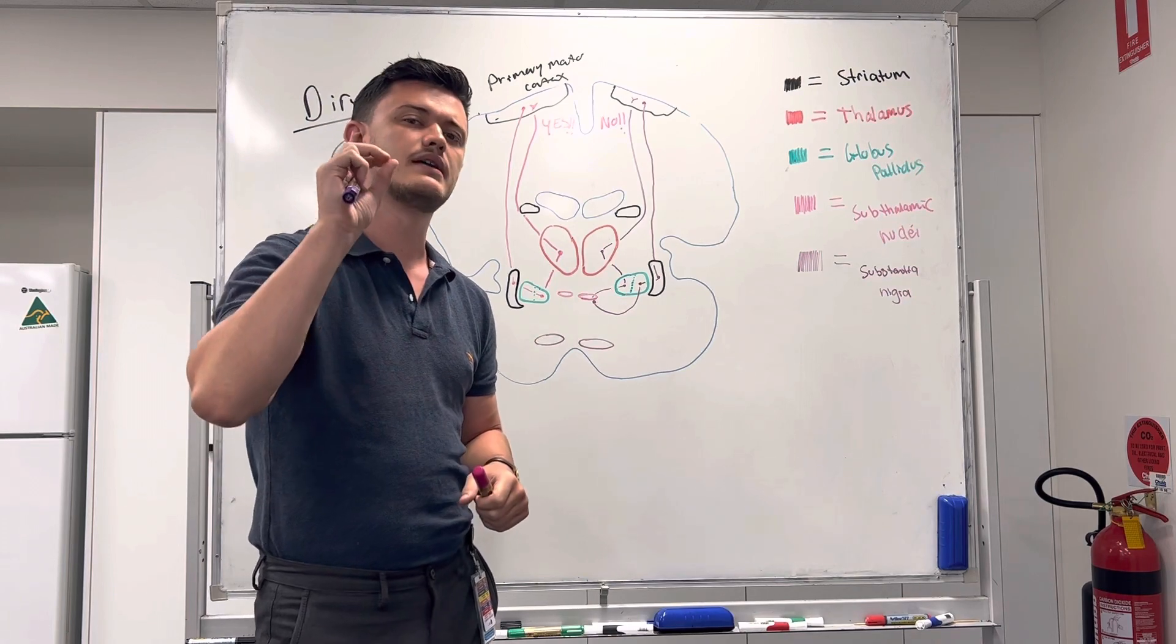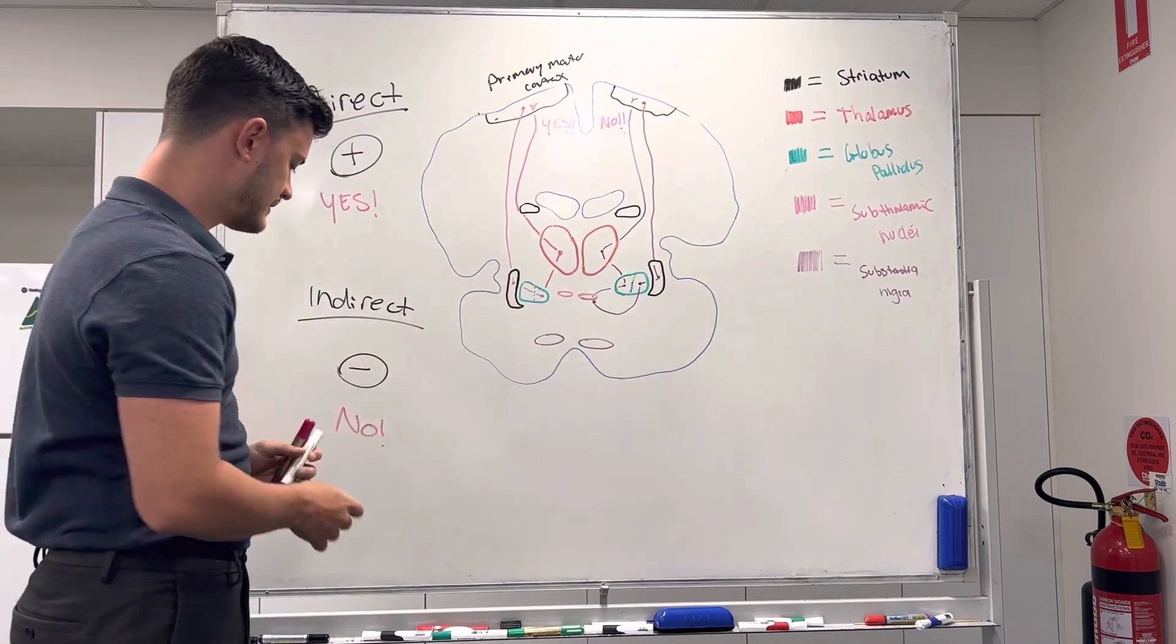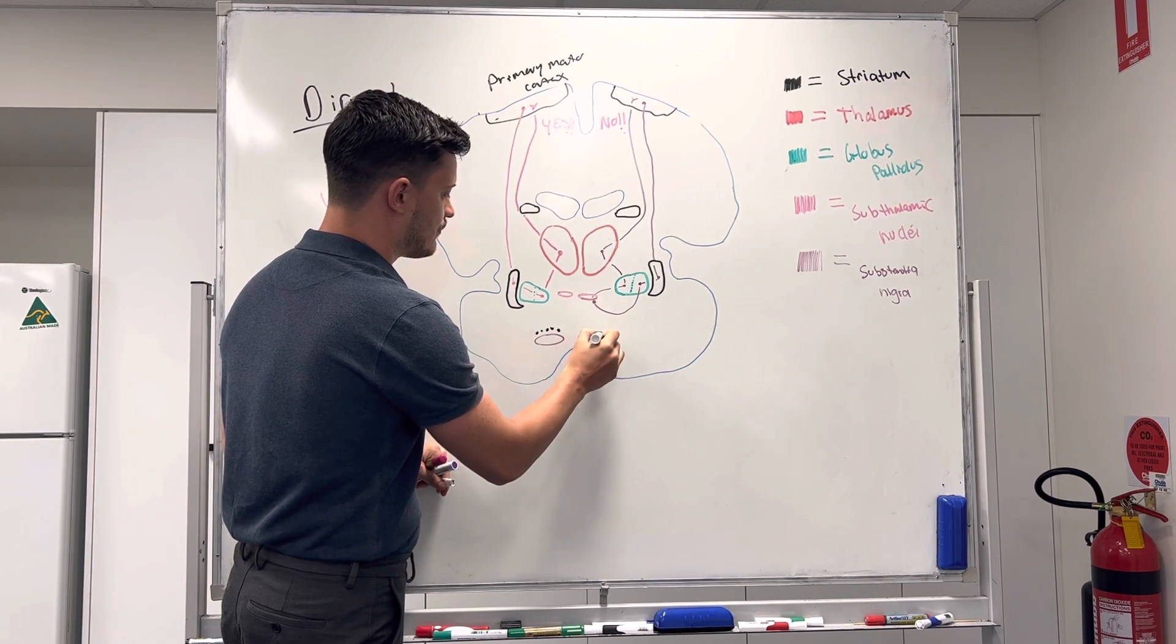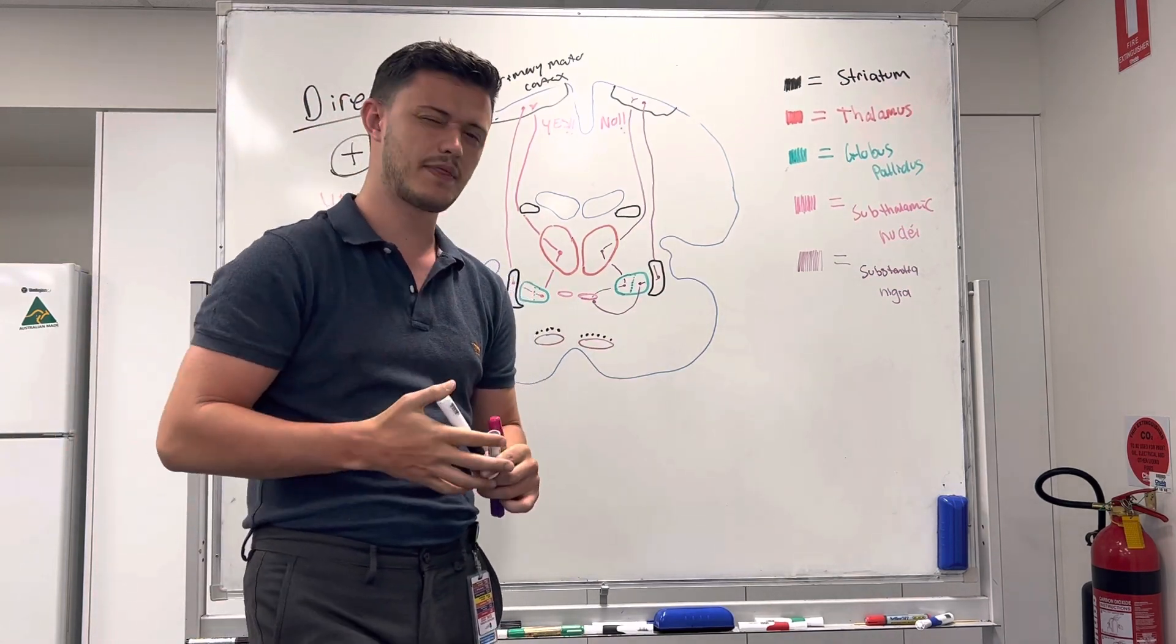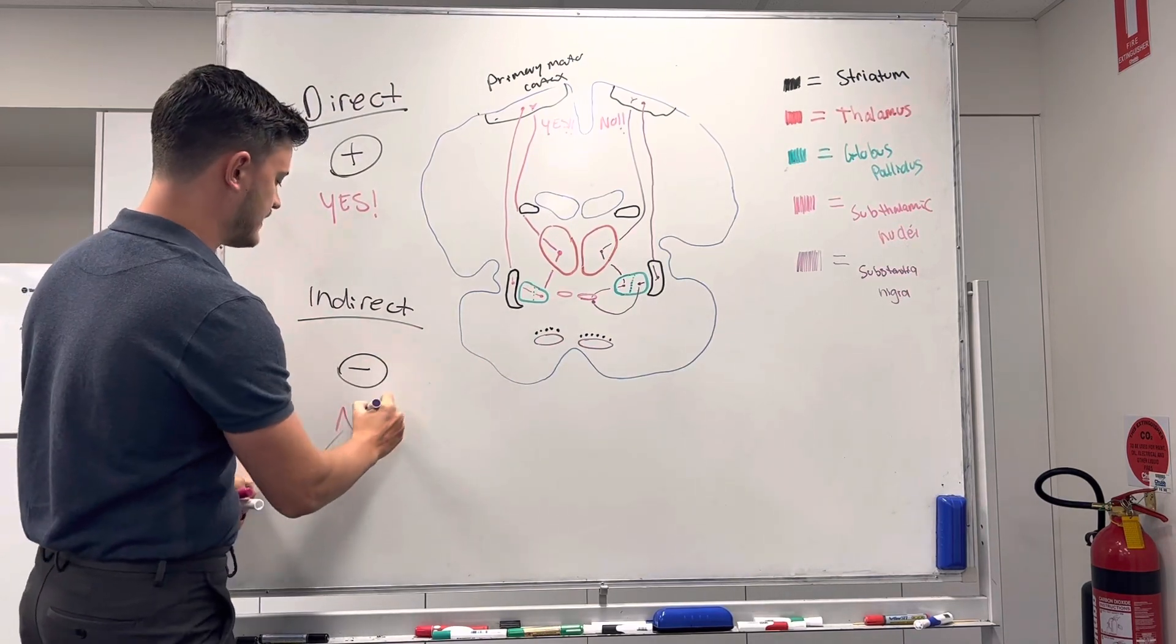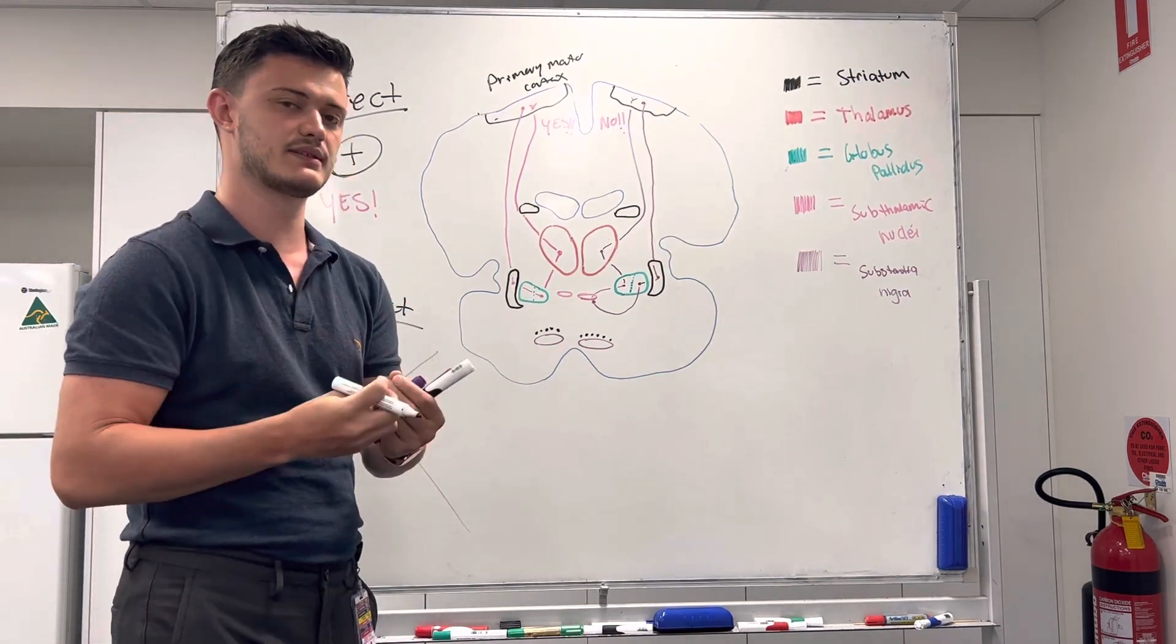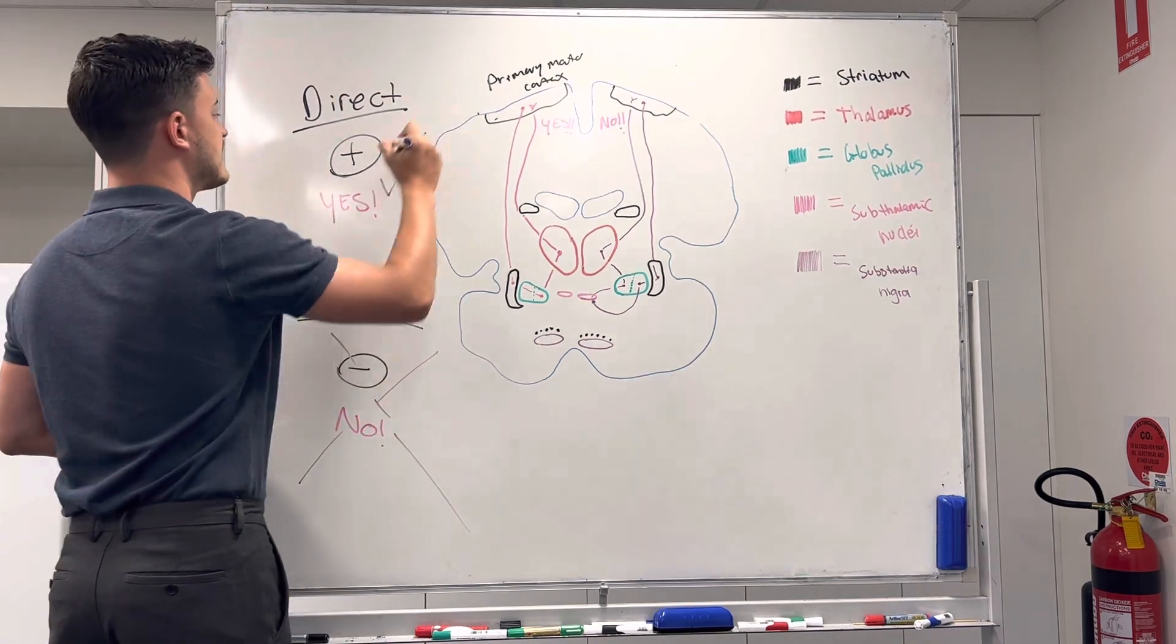And so, what we can see down here in purple is the substantia nigra, and it's responsible for secreting something called dopamine, and I'm sure you've all heard of that before. It's a really important player here in the basal ganglia. Why? What does it do? Really, it does one thing. It says no to the no pathway. So, it says, no, I don't like this pathway. So, it crosses it out, says no. This is what we call disinhibition. It inhibits the inhibitor.